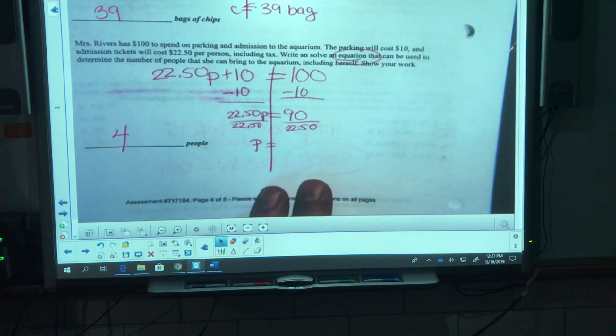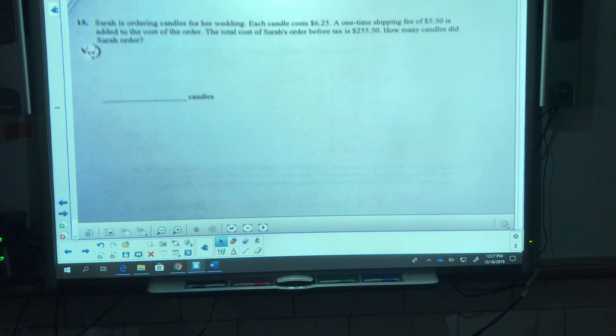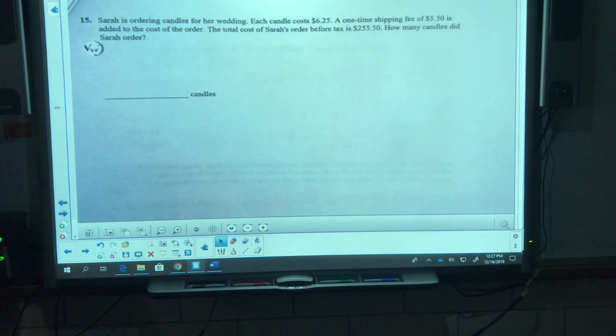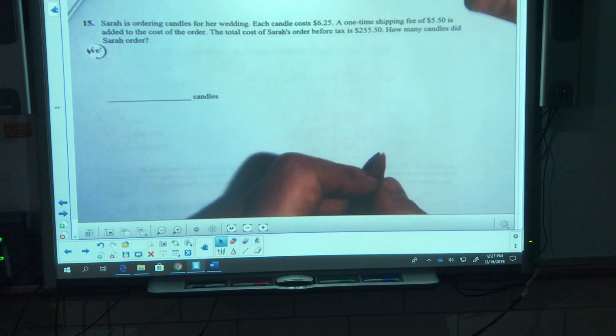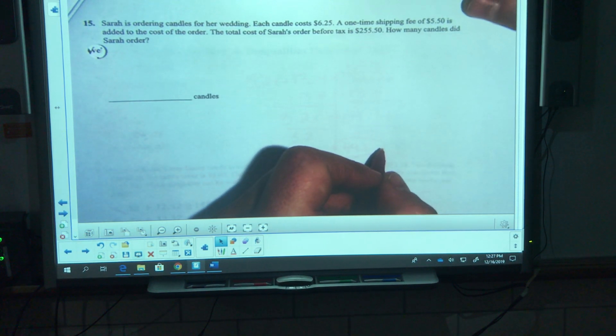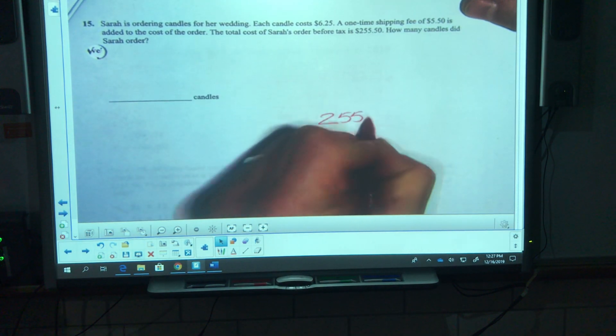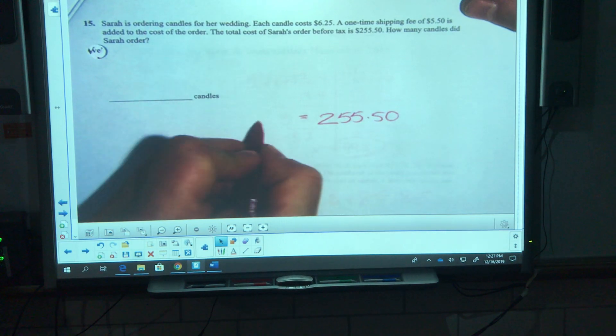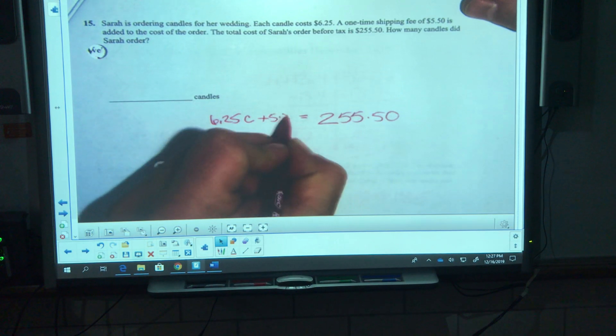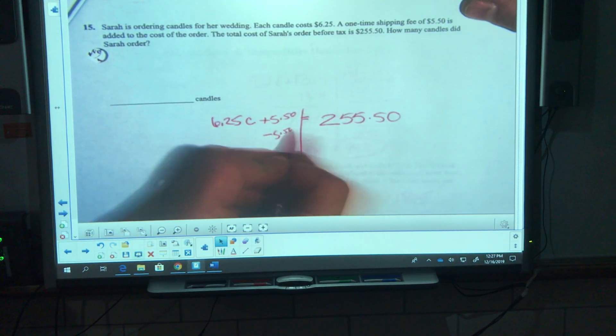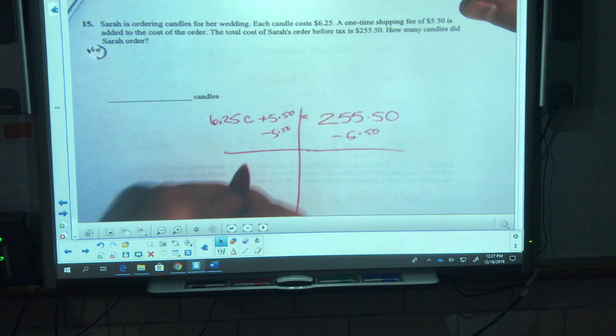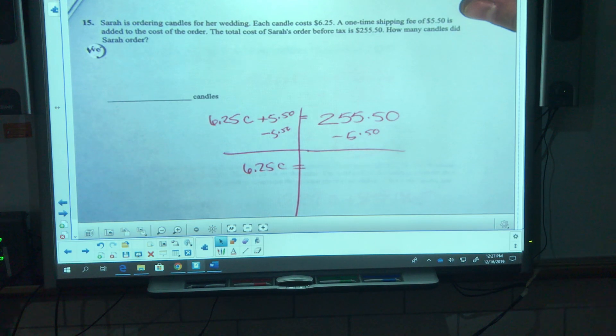Last but not least, number 15. For me it's up at the top of the next page, for you it might be at the bottom of the page before. Sarah's ordering candles for her wedding. Each candle costs 6.25. A one-time shipping fee of 5.50 is added to the cost of the order. The total cost before tax is 255.50. How many candles did she order? It's 6.25 per candle and 5.50 for the order.